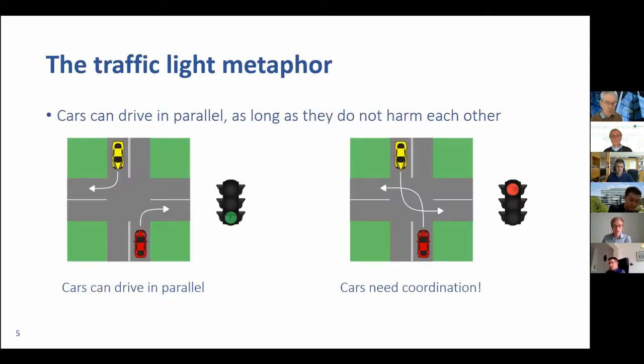In order to answer that question, I would like to use a metaphor called the traffic light metaphor, saying that cars can drive in parallel as long as they do not harm each other. On the left hand side, you can see two cars. They both want to turn to the right; it's perfectly okay, there will not be an accident, so we can give a green light. On the right hand side, the cars want to turn to the left. However, turning to the left would create an accident, and therefore there is a red light because these cars need to be coordinated.